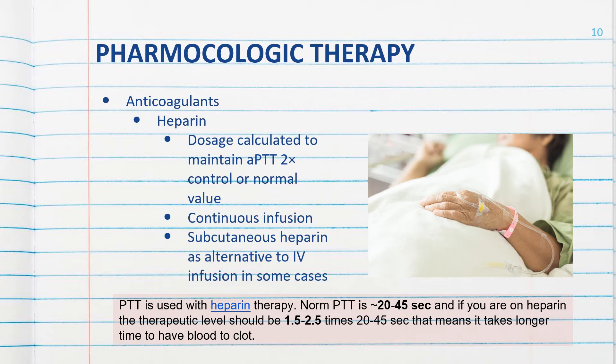Generally, they will continue taking Coumadin for at least three months. When DVT recurs or risk factors such as altered coagulability or cancer are present, anticoagulant therapy may be longer than three months. Regular follow-up is necessary to ensure the INR remains within the desirable range for anticoagulation.